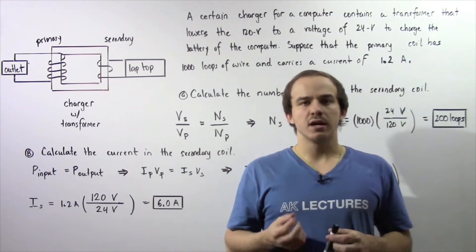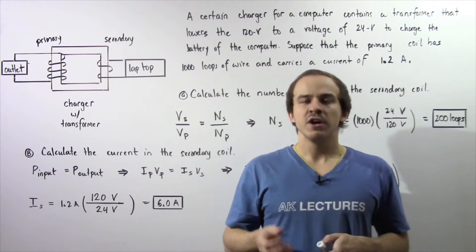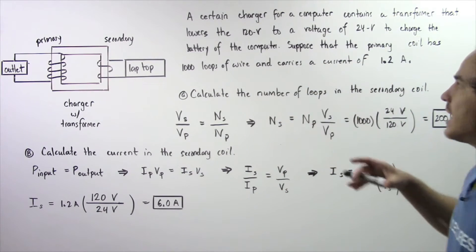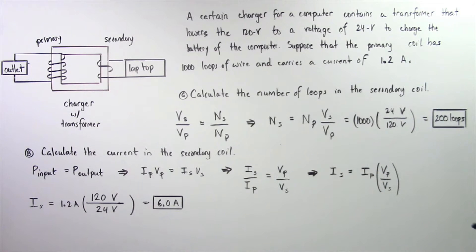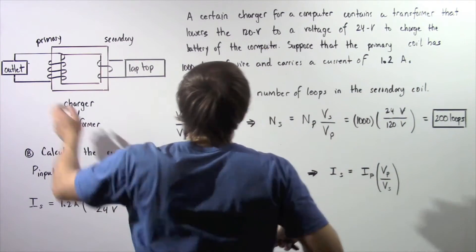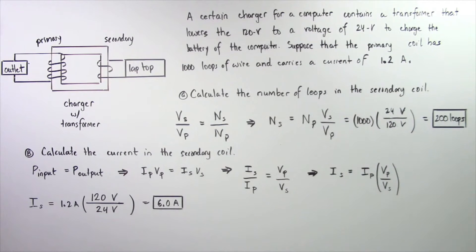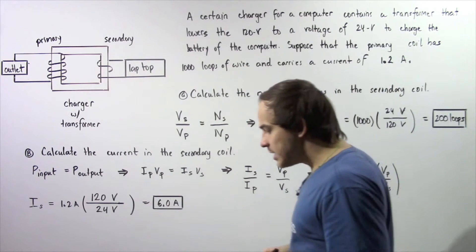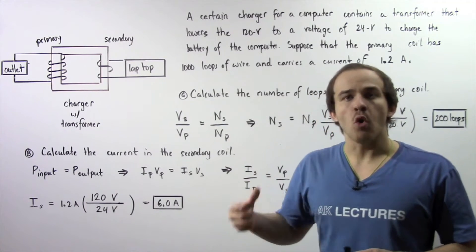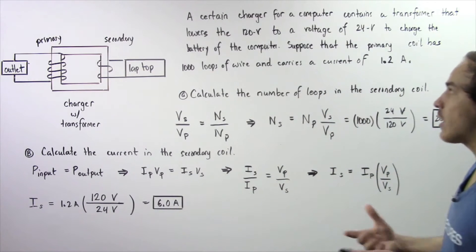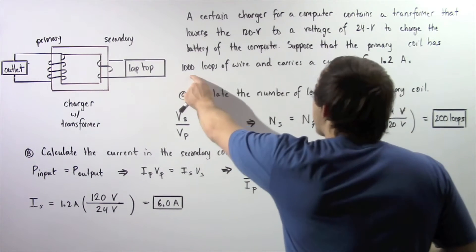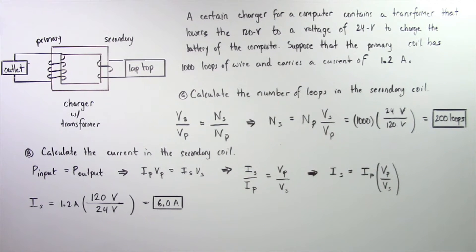In the previous lecture, we discussed transformers and derived the transformer equation for alternating current. Now let's look at the following application. Suppose a certain charger for a laptop contains a transformer that lowers our 120 volts received from the outlet to 24 volts to charge the battery. Also, within our charger, there is a device that transforms alternating current to direct current so we can charge our battery. The primary coil of our transformer contains 1000 loops of wire and carries a current of 1.2 amps.